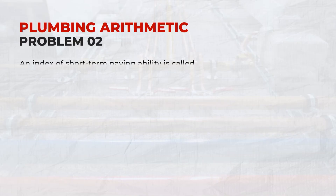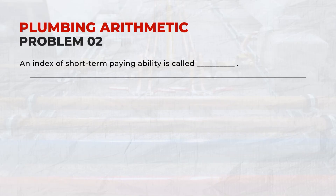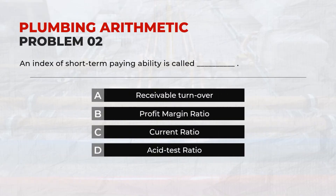An index of short-term paying ability is called: C — Current Ratio.